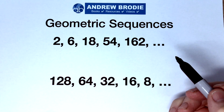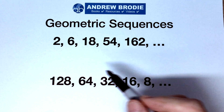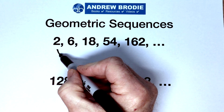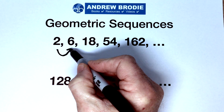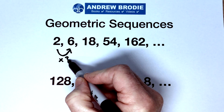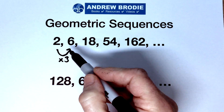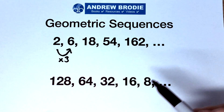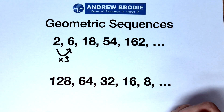These are geometric sequences. This one is going up by multiplying by 3. 2 times 3 is 6, 6 times 3 is 18, and so on.